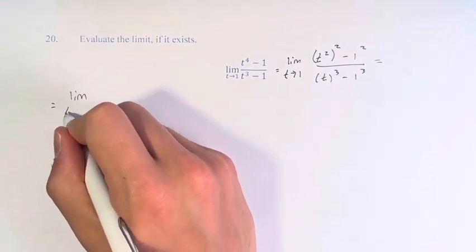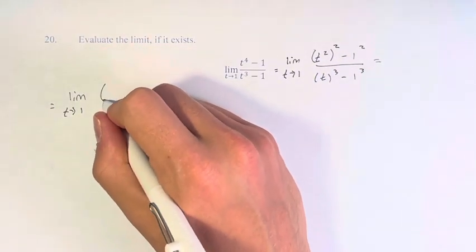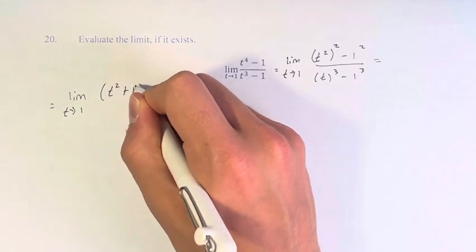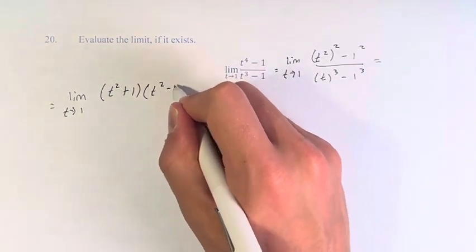So we know that when you have the difference of two squares, that's equal to the sum of those things, so t squared plus 1, times the difference of those two things, t squared minus 1.